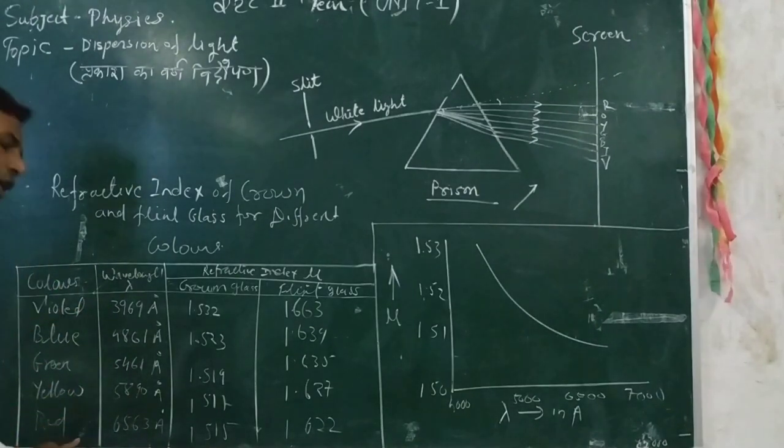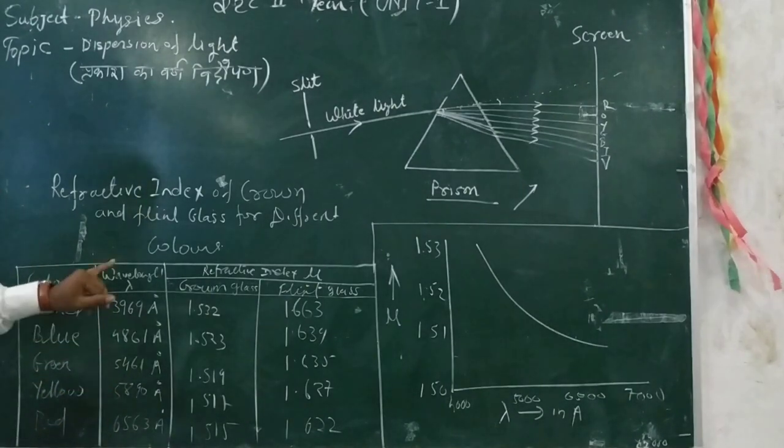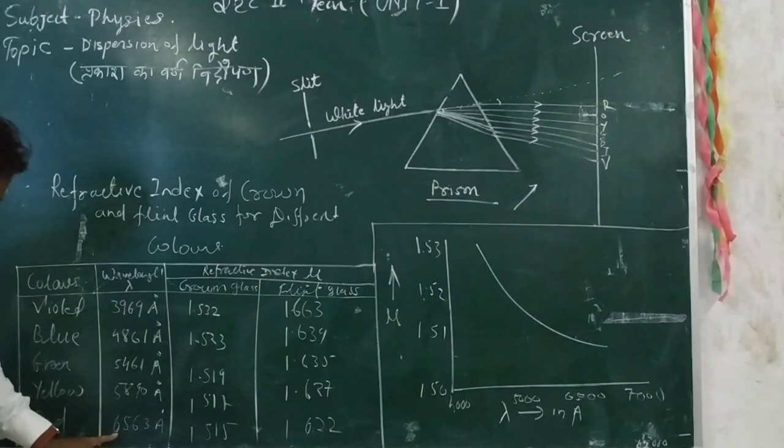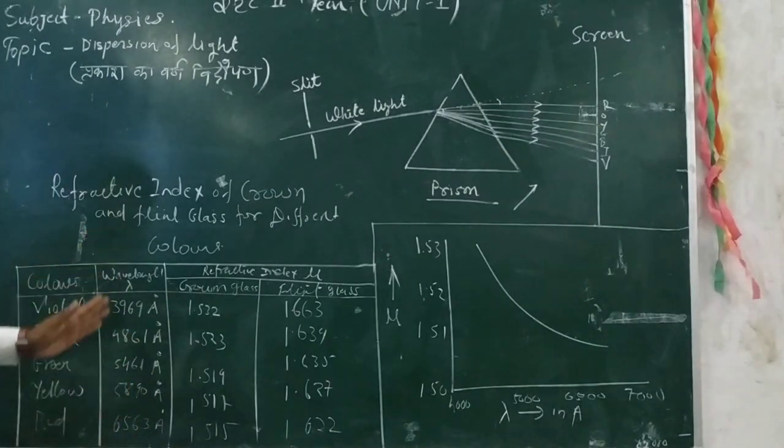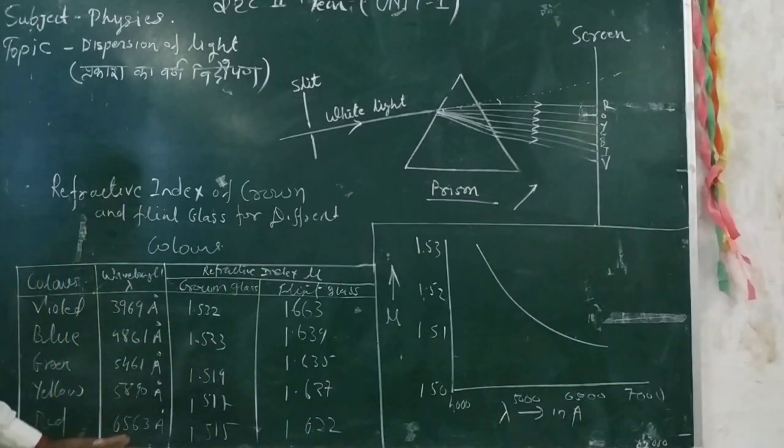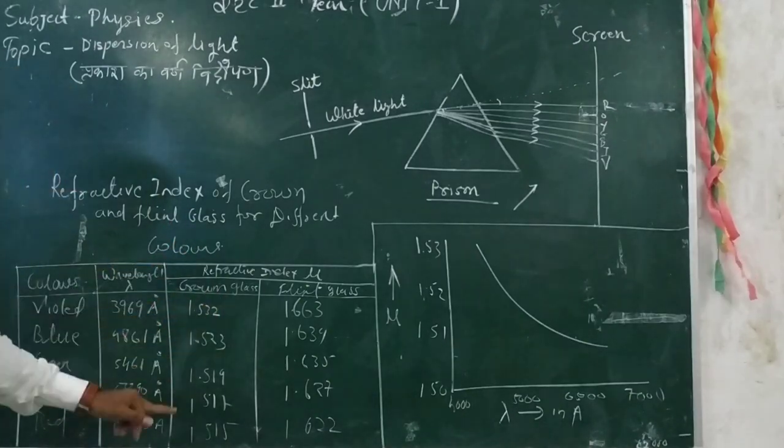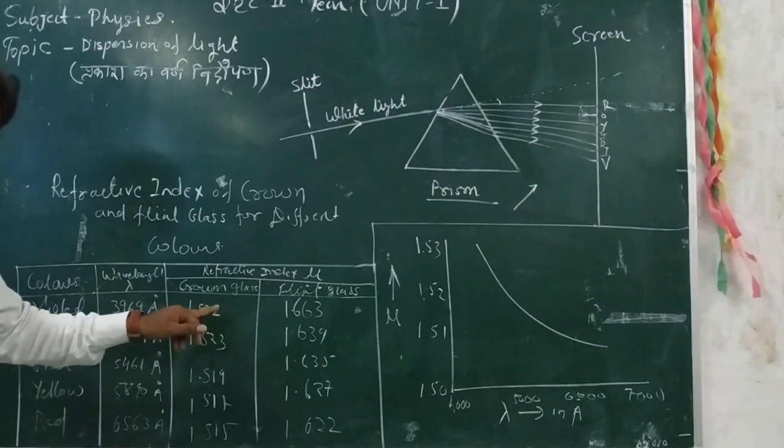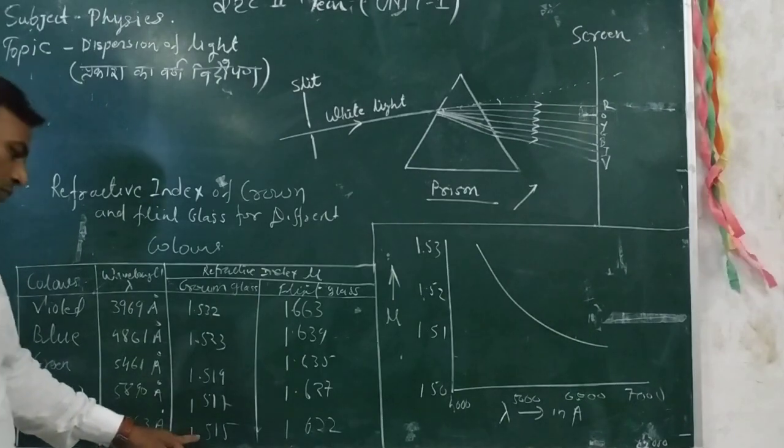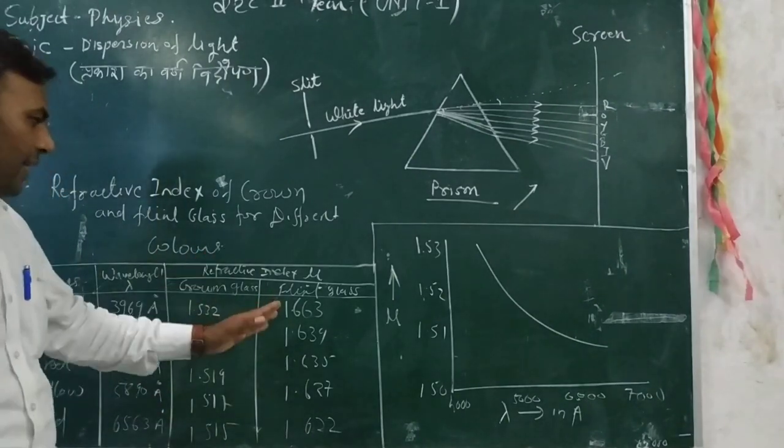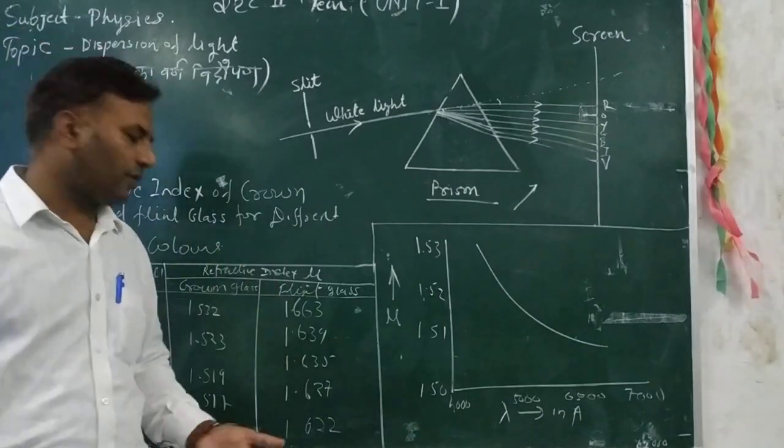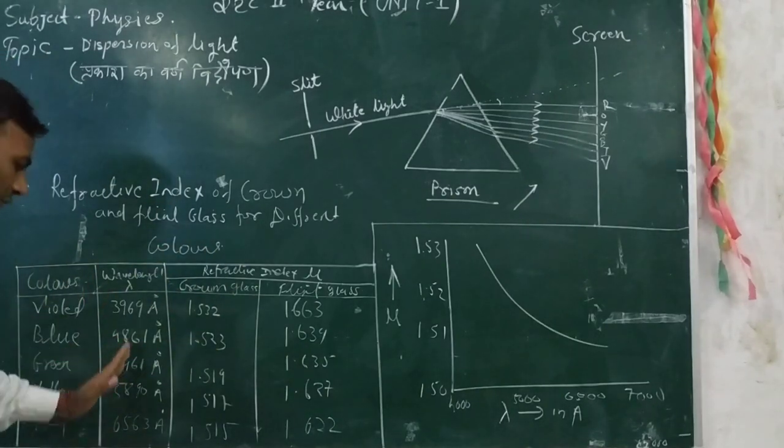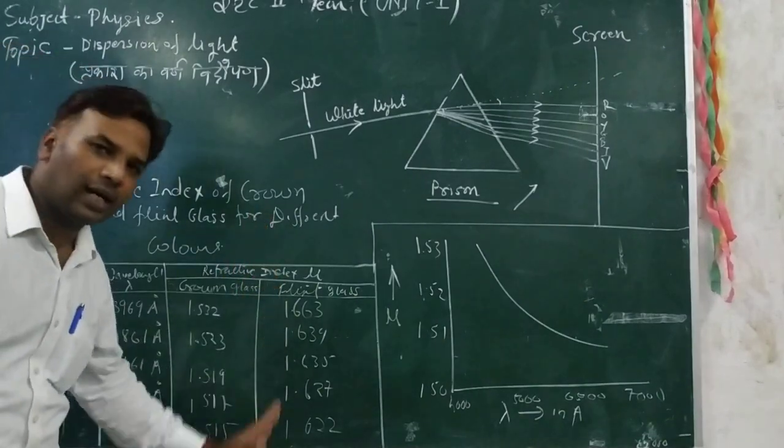As we follow the order of light colors, the wavelength in angstroms increases. We can see that violet is around 3969 angstroms, but the red color is 6563 angstroms. We can see that as wavelength increases, the refractive index is less and less. For example, 3969 angstroms has refractive index 1.532, and 6563 angstroms is 1.515. Similarly for flint glass and crown glass, the pattern follows: if wavelength is more, then the refractive index is less.